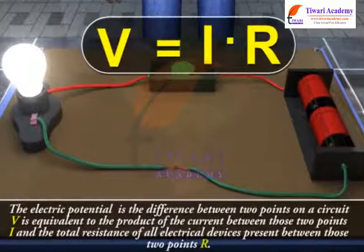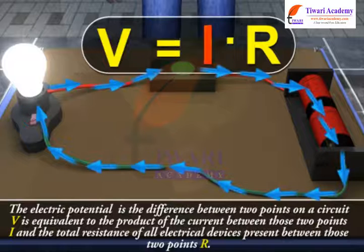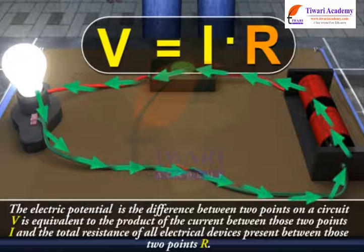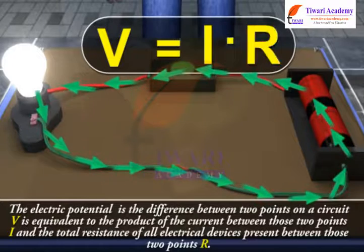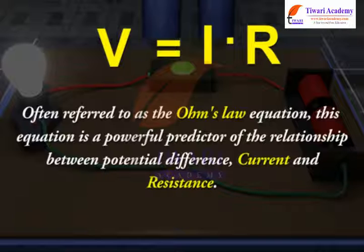In words, the electric potential difference between two points on a circuit V is equal to the product of the current between those two points I and the total resistance of all electrical devices present between those two points R. Often referred to as the Ohm's Law equation, this equation is a powerful predictor of the relationship between potential difference, current, and resistance.